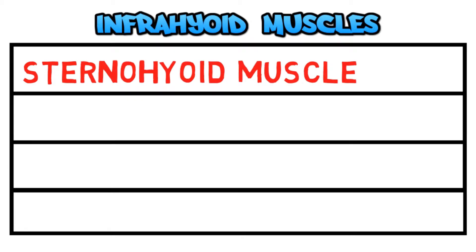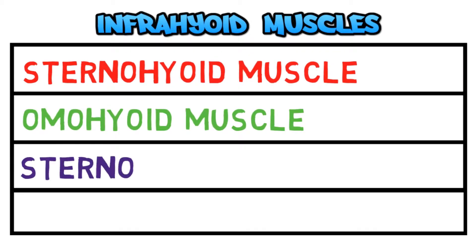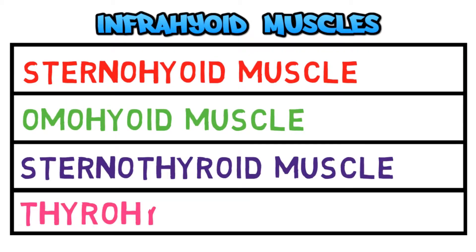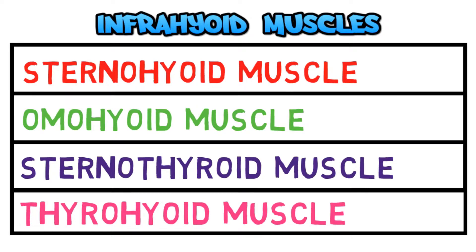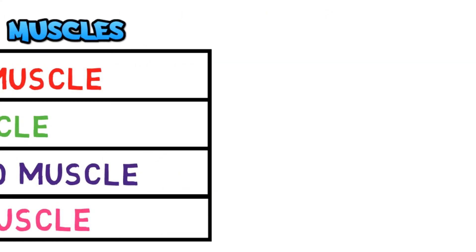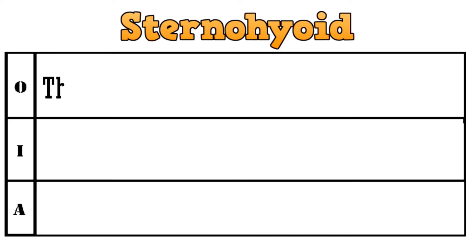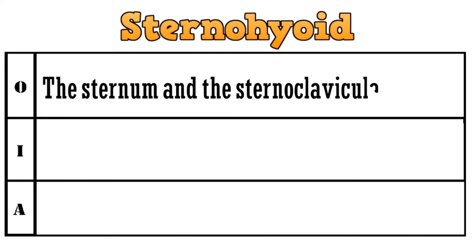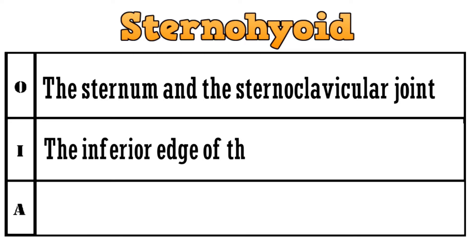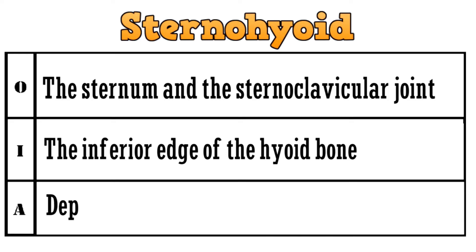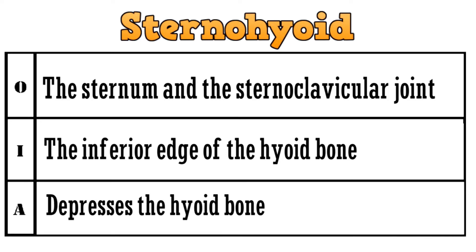The four infrahyoid muscles are: sternohyoid, omohyoid, sternothyroid, and thyrohyoid. Let's discuss each of these muscles separately. The first muscle is the sternohyoid. It originates from the sternum and the sternoclavicular joint and gets inserted to the inferior edge of the hyoid bone. The action of the muscle is to depress the hyoid bone.